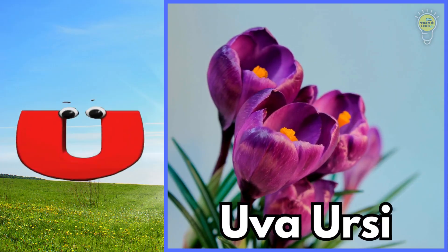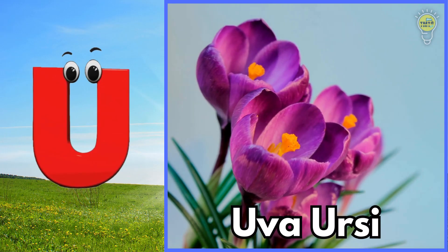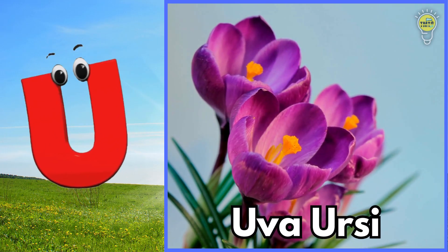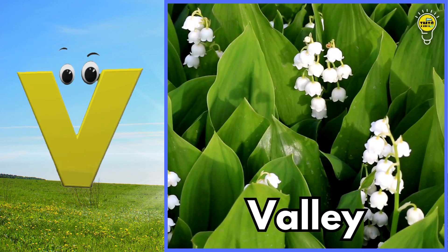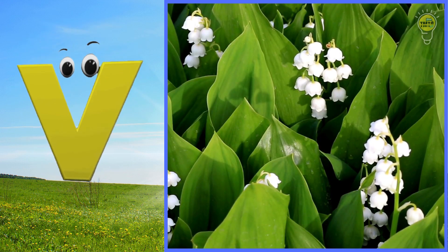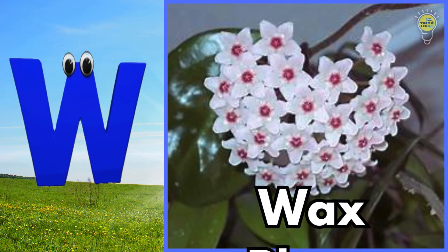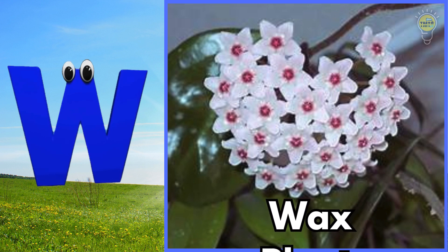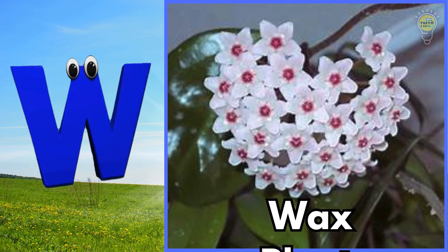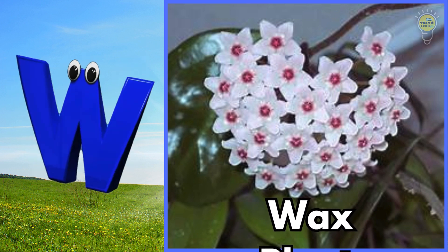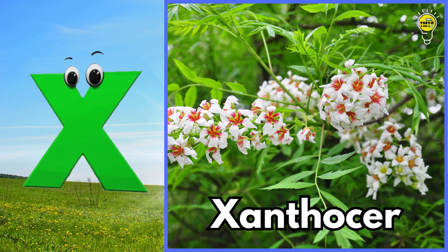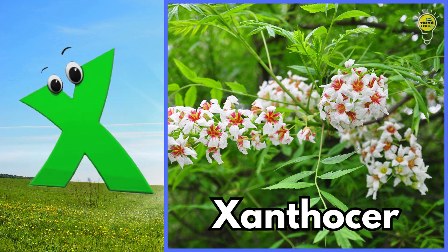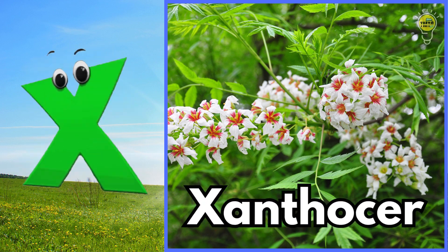U is for uva ursi flower, uva ursi flower. V is for valley flower, valley flower. W is for wax plant flower, wax plant flower. X is for xanthoceros flower, xanthoceros flower.